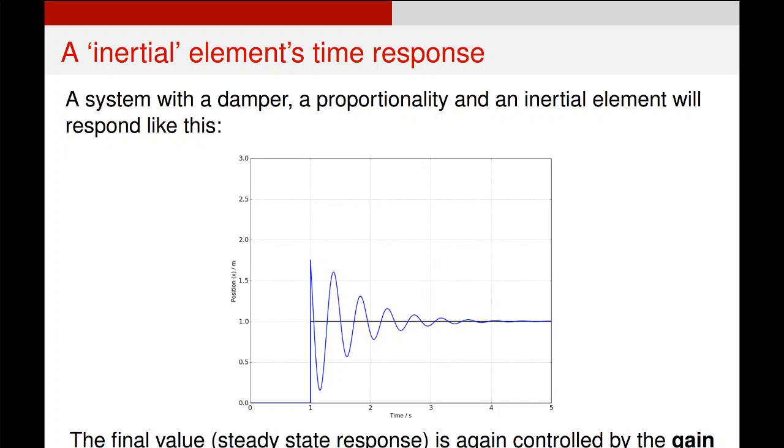Essentially if you are looking at some kind of black box system and it does this over time, you know straight away you're going to need an inertial element to accurately describe it. If it decays away over time you'll need a damper element, and if it steps up or steps down you know it will need a proportional element as well. In the real world most systems will require all three of these to get any kind of reasonably realistic response.